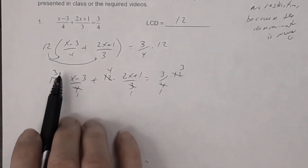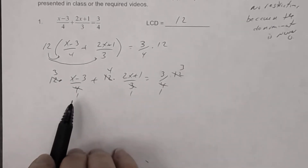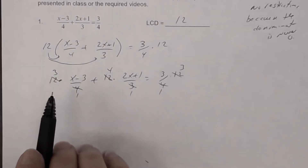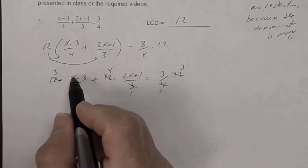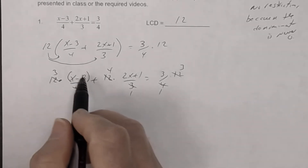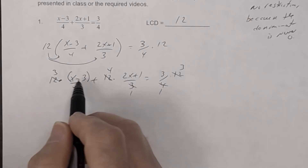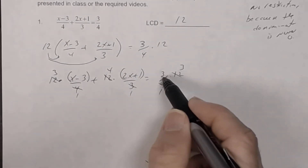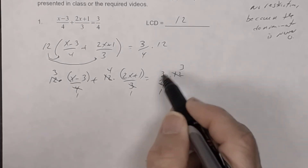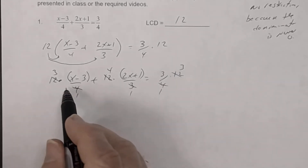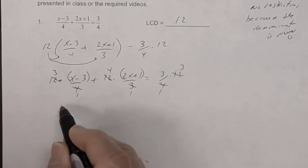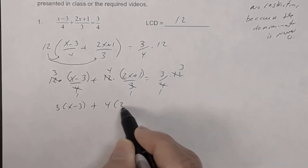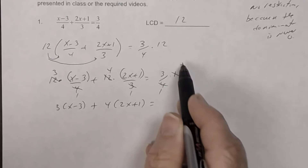Be careful here: you have 3 times (x minus 3), not 3x minus 3. Put the numerator in parentheses since it has more than one term. So this becomes 3 times (x minus 3), plus 4 times (2x plus 1), equals 3 times 3, which is 9.